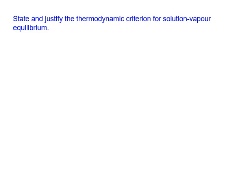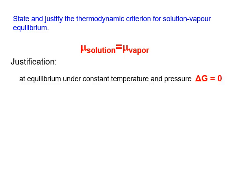Question number two: state and justify the thermodynamic criterion for solution-vapor equilibrium. We already established that the thermodynamic criterion for two phases in equilibrium is that the chemical potential of the two phases must be the same. Let's briefly go over the justification: at equilibrium under constant temperature and constant pressure, the second law says delta G should be zero — Gibbs energy should not change.